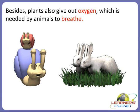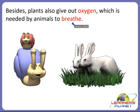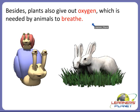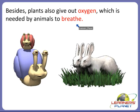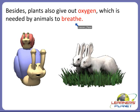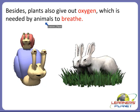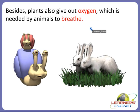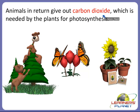Besides, plants give out oxygen gas which is needed by the animals to breathe. So plants and animals are dependent on each other — animals get food from plants and they also get oxygen from plants. Animals in return give out carbon dioxide gas, which is needed by the plants for photosynthesis.